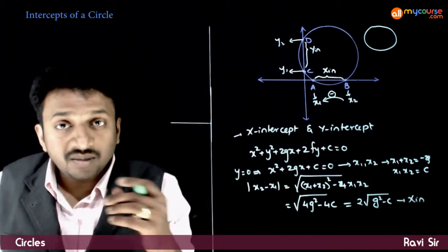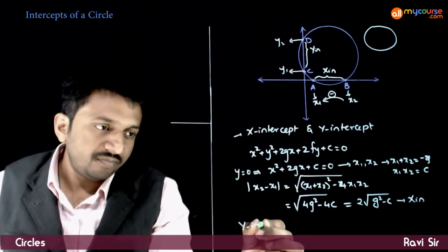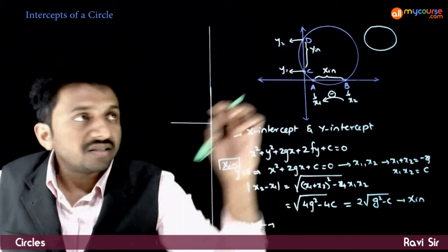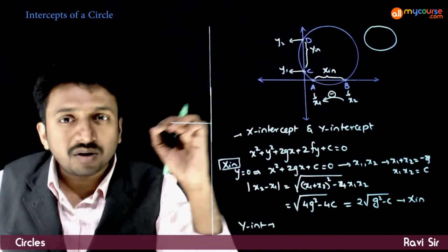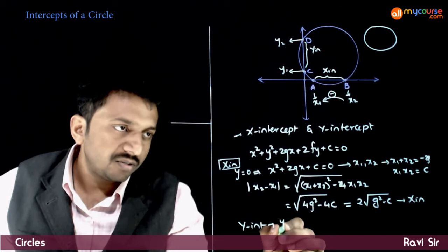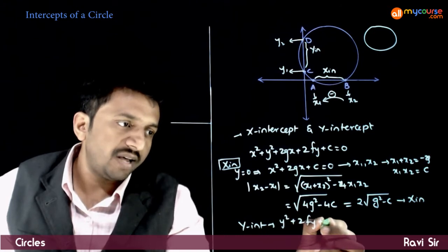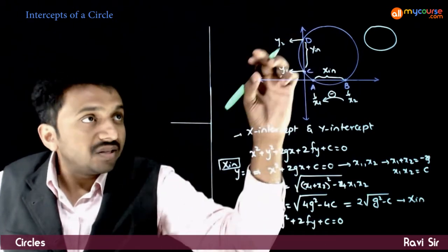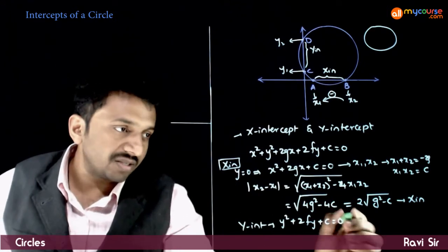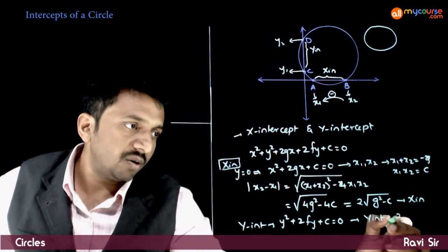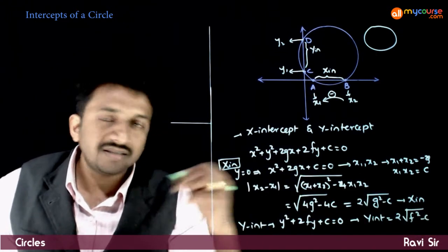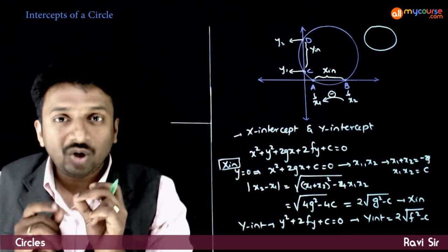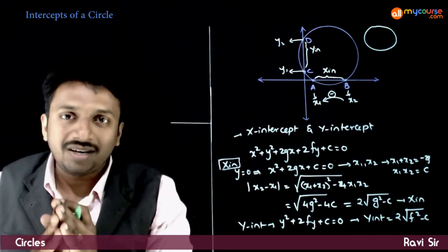So 2√(g² − c) is the formula for the x-intercept. For the y-intercept, these points are of the form (0, y), so substitute x = 0: y² + 2fy + c = 0. This equation has two roots y1 and y2, and following the same process, the y-intercept equals 2√(f² − c).